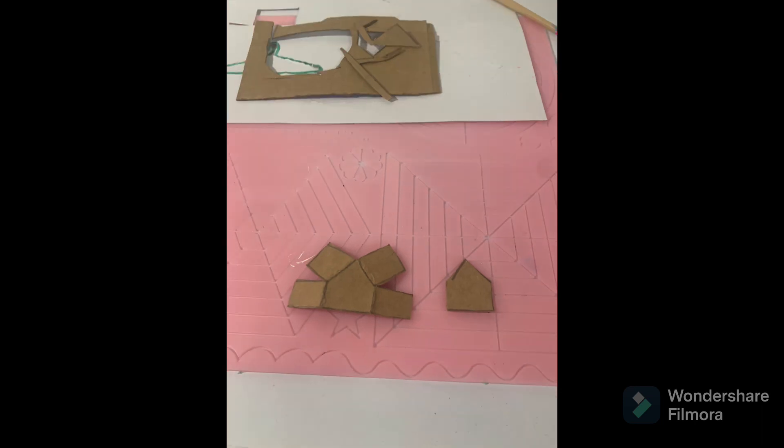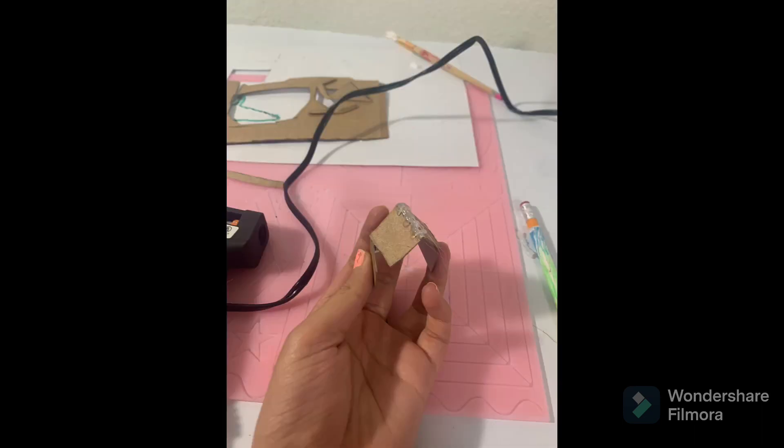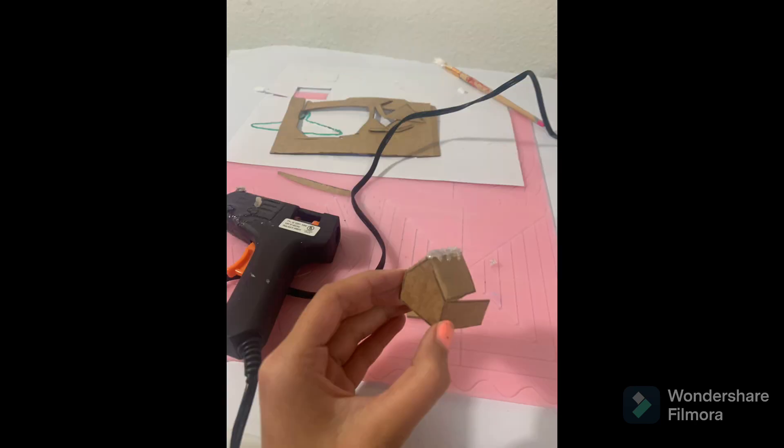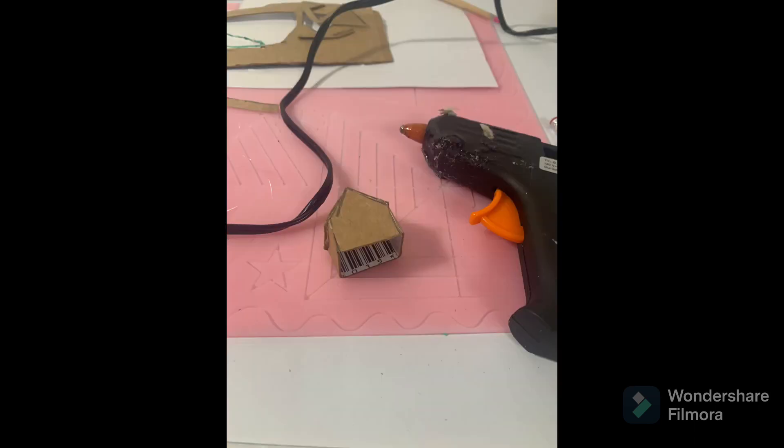I used a hot glue gun, but you can also use liquid glue. As shown, glue the pieces together. You can make icicles with the glue, and then glue all the pieces together, including the back piece.